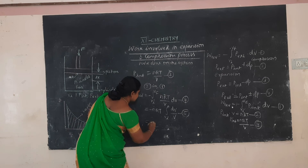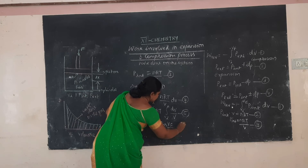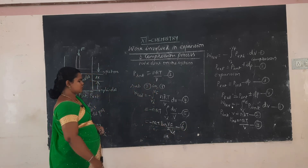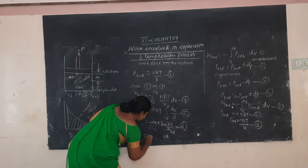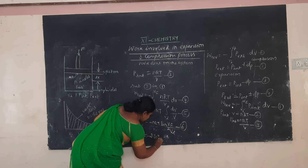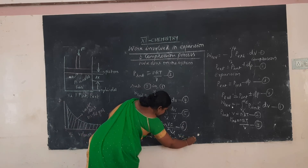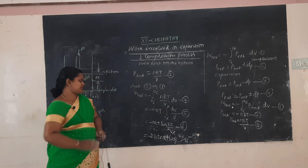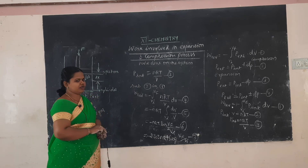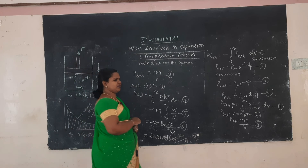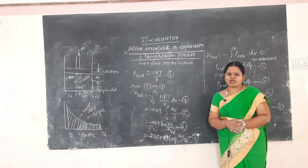Therefore, W_reversible = -NRT ln(V_F/V_I) — the sixth equation. Converting to common logarithm: W_reversible = -2.303 NRT log(V_F/V_I) — the seventh equation. When V_F is greater than V_I it is expansion; when V_F is less than V_I it is compression.